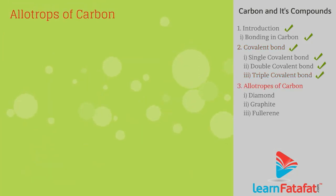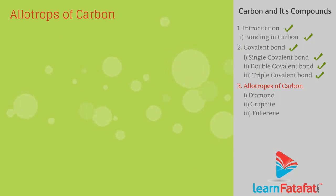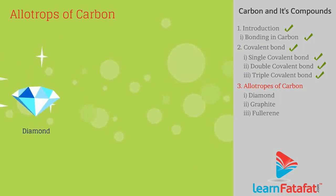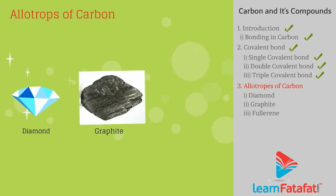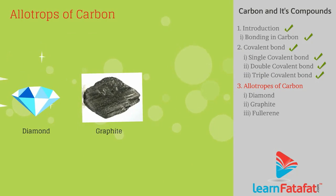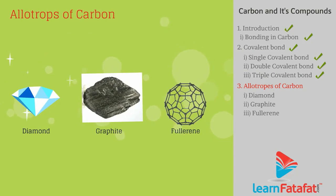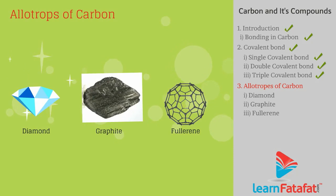Allotropes of carbon: Carbon occurs in different forms such as diamond, graphite, and fullerene, with varying physical properties. These different forms are called allotropes of carbon.